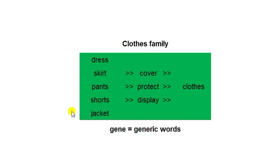What is the gene that they have in common? Why are they in this family? There are three genes we can identify. First, it's something that people wear to cover themselves. Second, it will protect us from the cold and from the heat. And third, sometimes we wear it to display our wealth or our beauty. These are the genes — the things that make us define something as clothes.